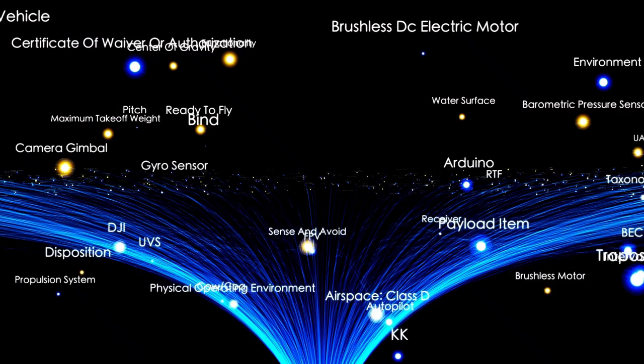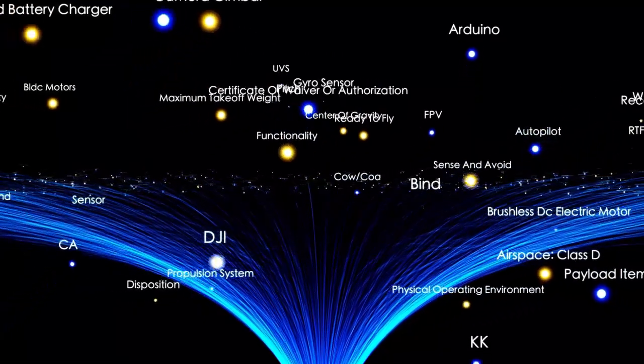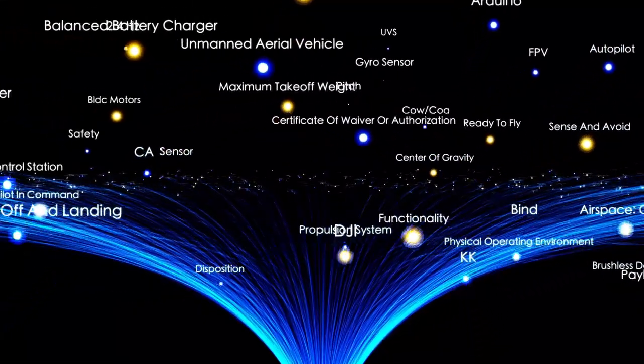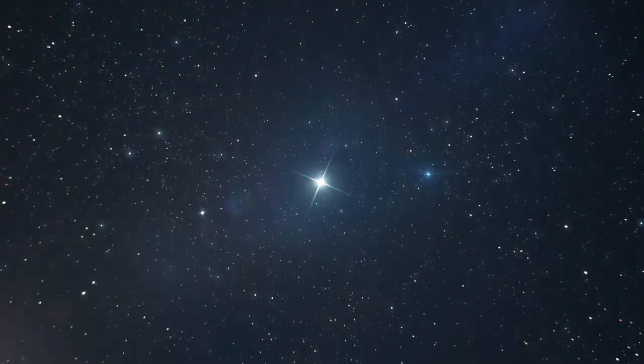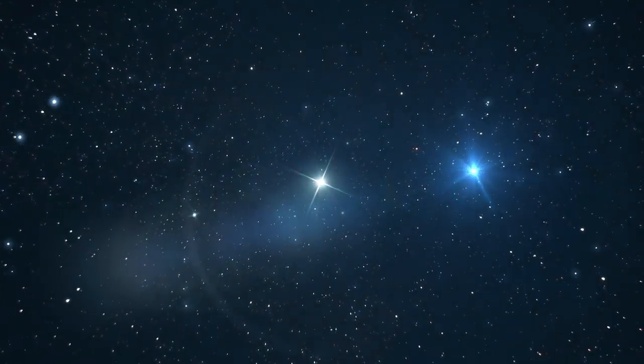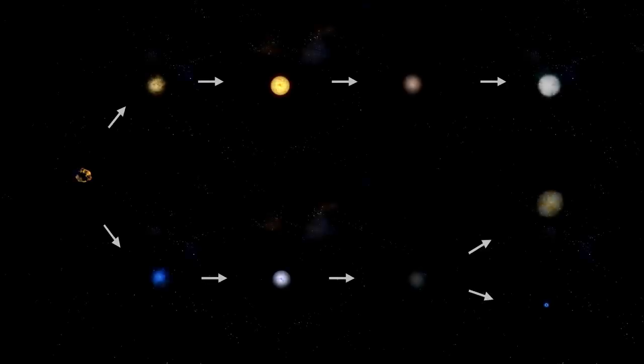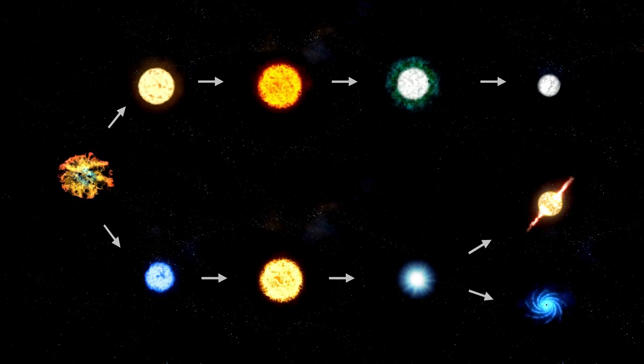This event has also reignited questions about the internal mechanics of red supergiants. These stars are extremely difficult to model because of their immense scale and the turbulent conditions within them. Betelgeuse has long puzzled scientists with its irregular light patterns, and this sudden brightening adds another layer of complexity.